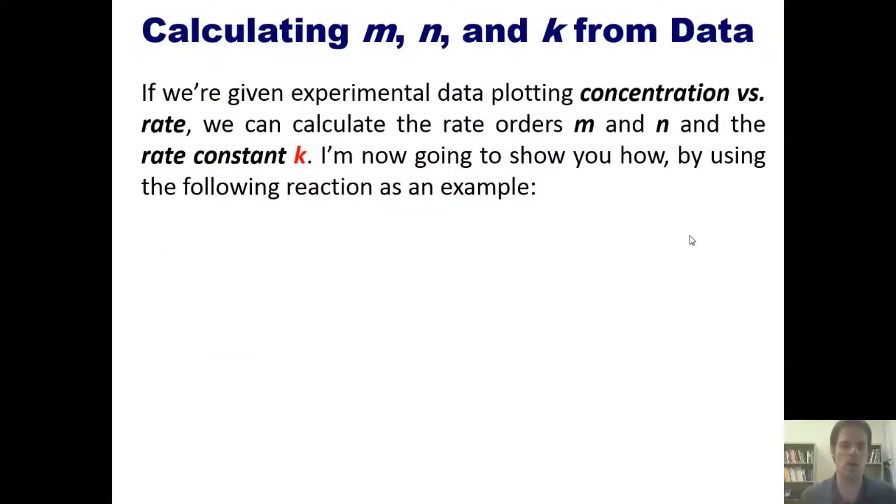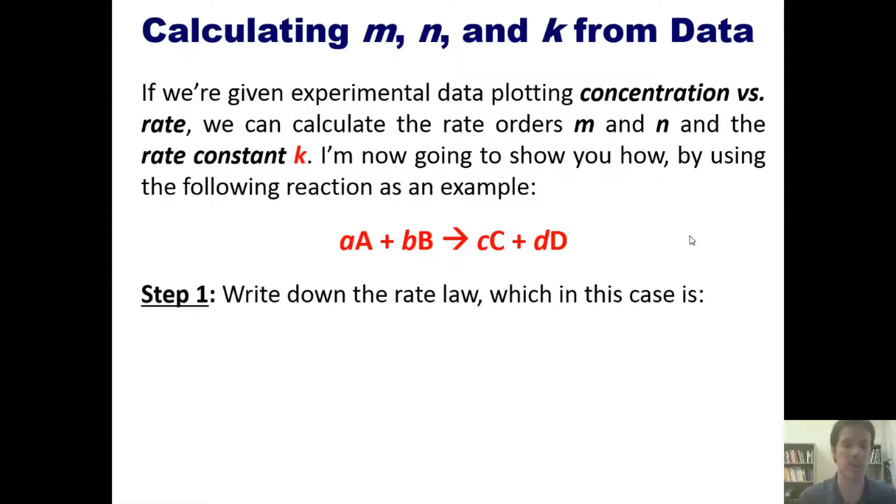That brings us back then to how we go about calculating M, N, and K. If we're given experimental data plotting concentration versus rate, as I showed you in the earlier example with ammonium and nitrogen dioxide, we can calculate the rate orders M and N and the rate constant K. I'm now going to show you how by using the following reaction as an example. If we were asked once again to calculate M, N, and K, here's what we do. Step one: write down the rate law, which in this case is going to be rate equals K times the concentrations of A and B each raised to some exponent M and N. We have no idea what M and N are yet, but we should note that M and N do not equal A or B respectively. I mean they might end up equaling A or B, but if they do it's just completely coincidental because M and N can only be determined experimentally and not by just looking at the balanced chemical equation.